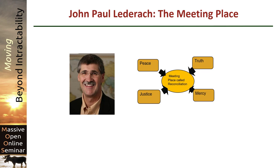I think I've talked about John Paul Lederach's meeting place in each of the previous reconciliation videos, but here's where it really comes into play, because three of his four components of reconciliation are front and center in retrospective reconciliation processes. TRCs are designed to elicit and publicize the truth of what happened in the past. They're supposed to dispense justice, and sometimes they give mercy, otherwise known as amnesty. This, it is hoped, will lead to peace, although Lederach treats peace as an input to reconciliation, not an output.